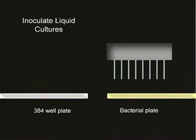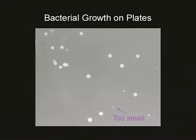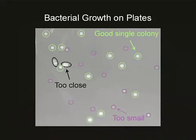The computer software is so sensitive that it will not allow colonies that are too close together to be picked. So each clone that's picked represents a single transformation event. This is a lot better than picking colonies by hand with toothpicks.